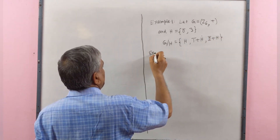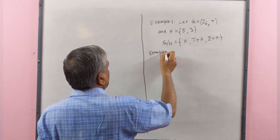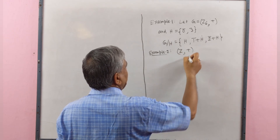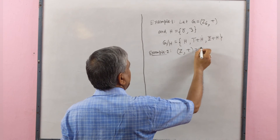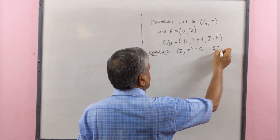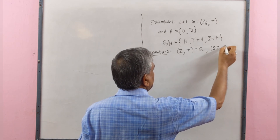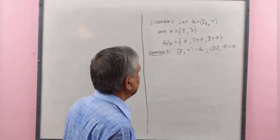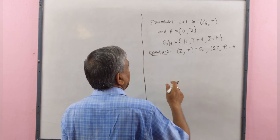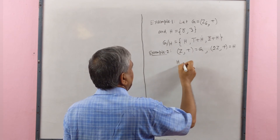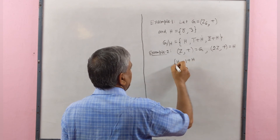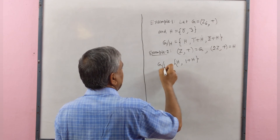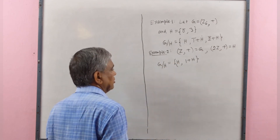Example 2: Let Z with addition be a group G, and 2Z with addition equal to H be a normal subgroup of G. Then H and 1 plus H, only two elements, are the elements of quotient group G by H.